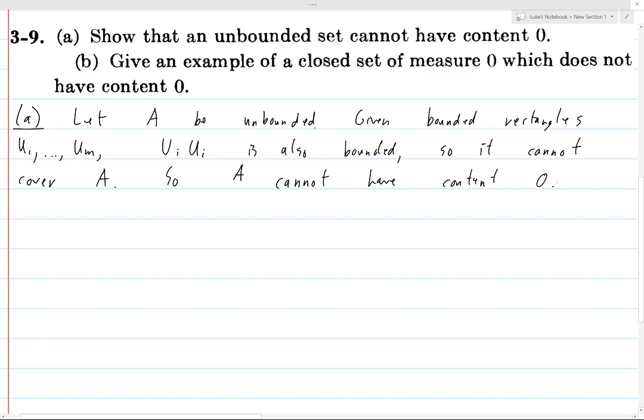Okay, so now let's move on to B, and we want to give an example of a closed set of measure zero which does not have content zero. I don't know why they specify closed here, I assume they're just trying to help you out. So the main idea here is that part A sort of makes you think, oh well, maybe we should look for an unbounded set.